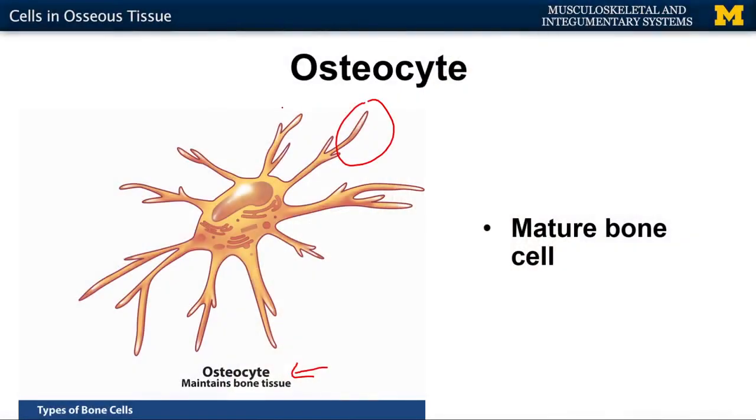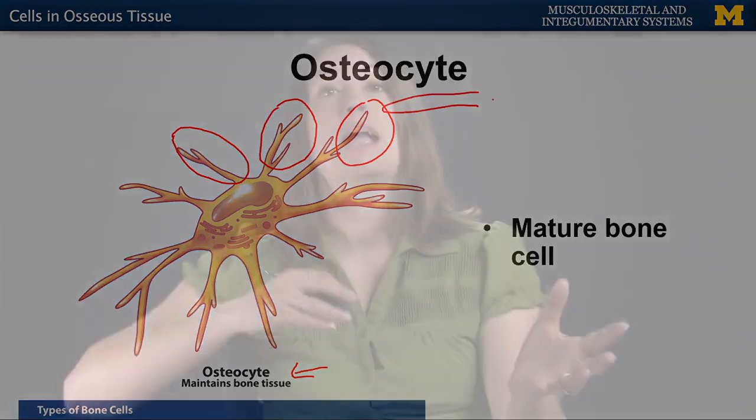It's important to note that osteocytes are not dead — unlike the corneocytes in the epidermis, these cells are still active. They communicate with other osteocytes to maintain the daily metabolism of bone tissue. Their processes extend outward and connect with processes of neighboring osteocytes, enabling cell-to-cell communication.